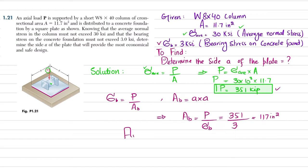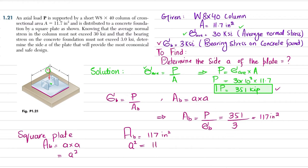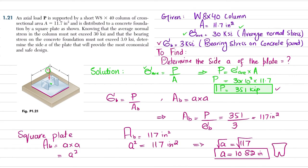The bearing area is 117 square inches, and since this is a square plate, area = a² = 117 square inches. Taking the square root of both sides gives a = 10.82 inches. So the minimum size of the bearing plate is 10.82 × 10.82 inches, which satisfies the given conditions.